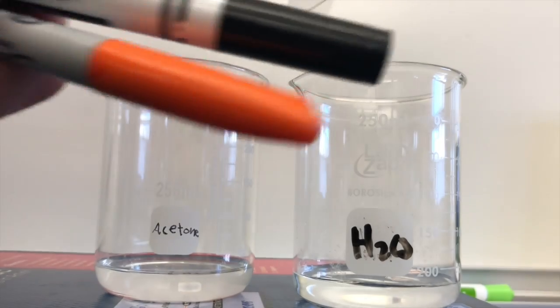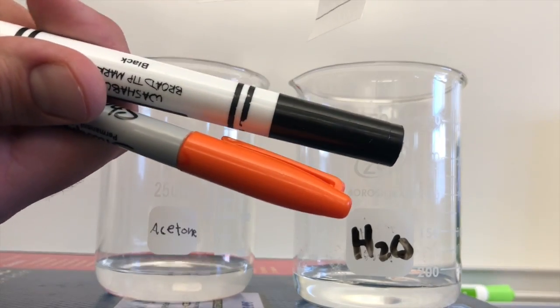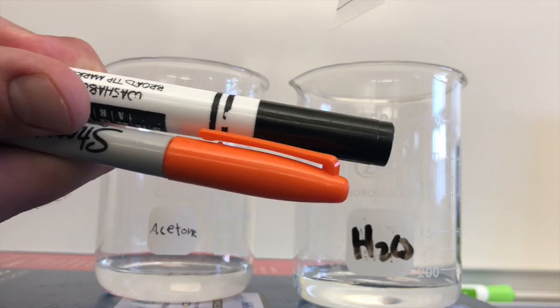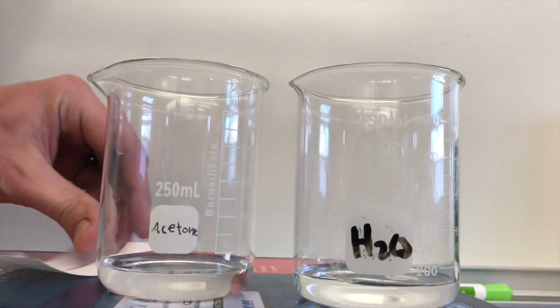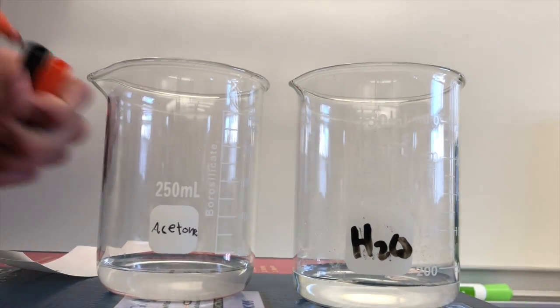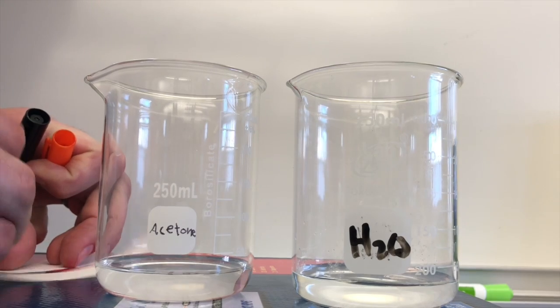And what we're gonna do with that is we're gonna take two different markers, an orange permanent marker and a black washable marker and I'll put a dot on each.